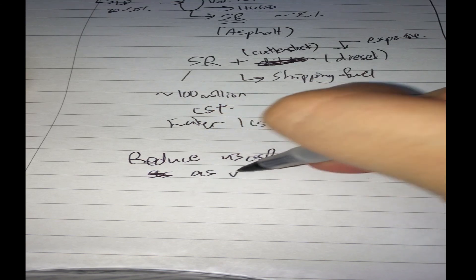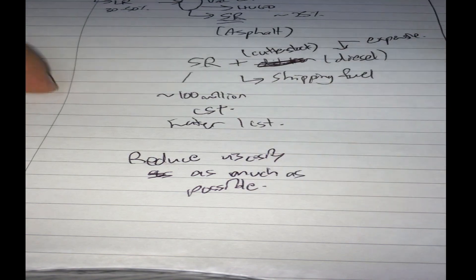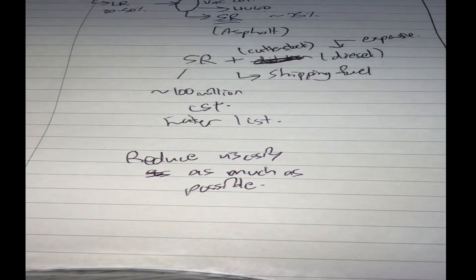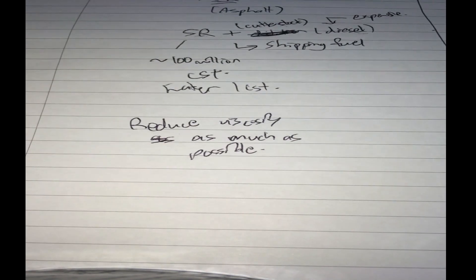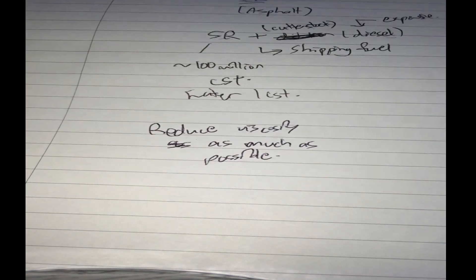Now one thing you can do is to reduce the viscosity of short residue. You reduce the viscosity as much as possible so that you can use less cutter stock to dilute it to sell as shipping fuel. This is expensive.